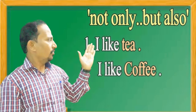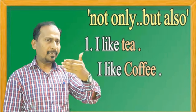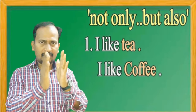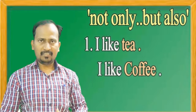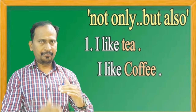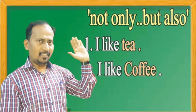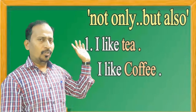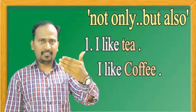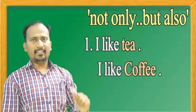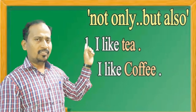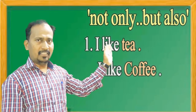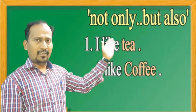When we use 'not only but also', the two separate sentences combine into a compound sentence. So what do we do? We identify the different words and the similar words. 'Tea' and 'coffee' are the different words. 'I' and 'like' are the similar words. We underline the different words.